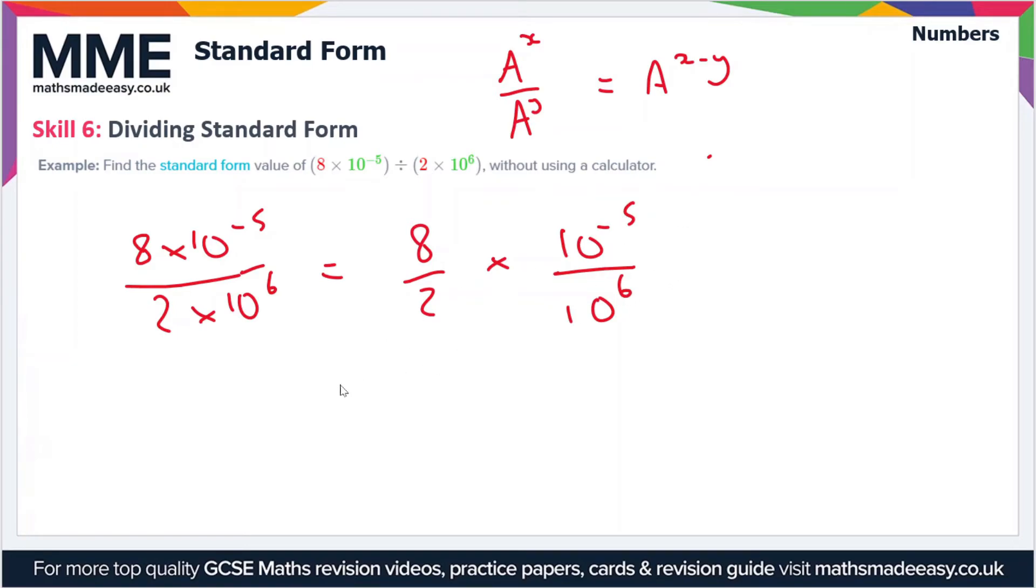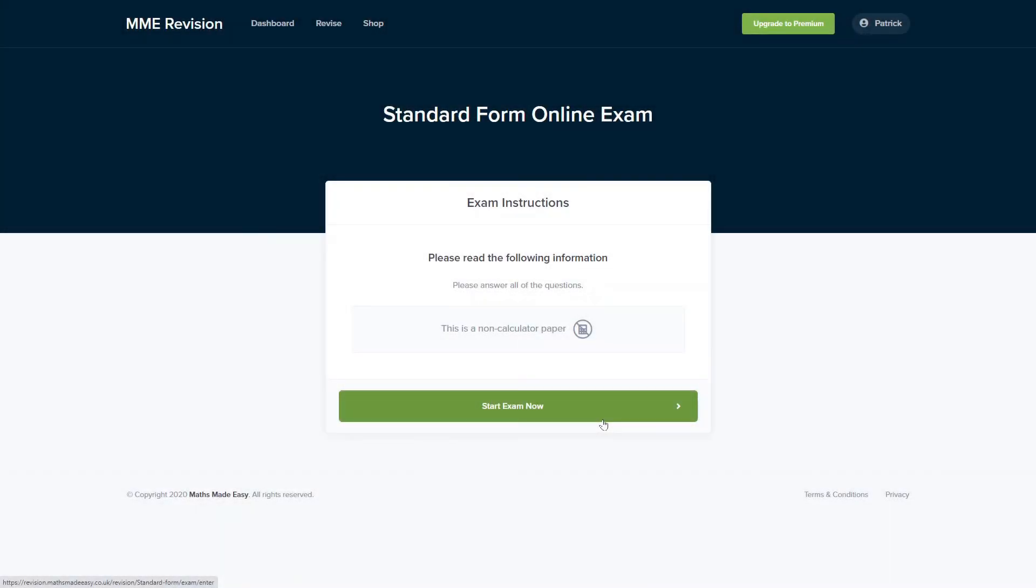In this case, we've got 8/2 times 10⁻⁵/10⁶. That's going to simplify to 4 times 10^(-5-6), which equals 4×10⁻¹¹. Now 4 is between 1 and 10, so this value is now in standard form.